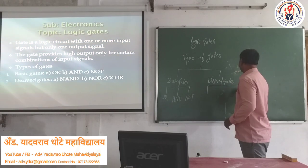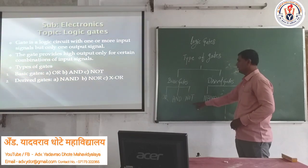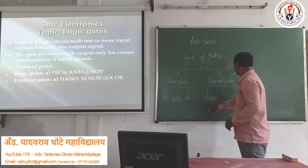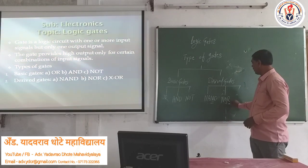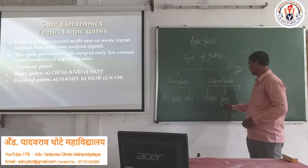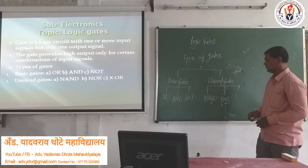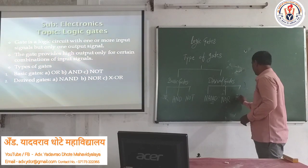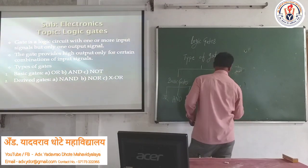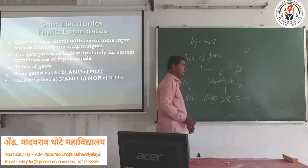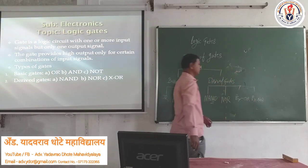In derived gates, there are also types. First is NAND gate — this gate is made by AND plus NOT. Second is NOR gate — NOR gate is made by OR gate plus NOT gate, a combination of OR and NOT gate. Third is XOR, which means exclusive OR gate. These are the derived gates.